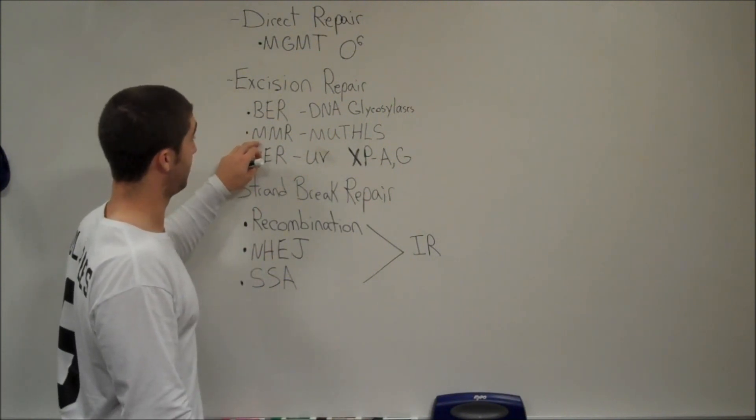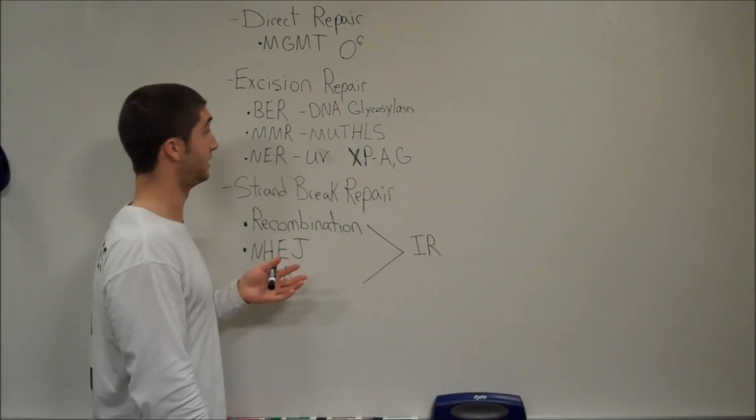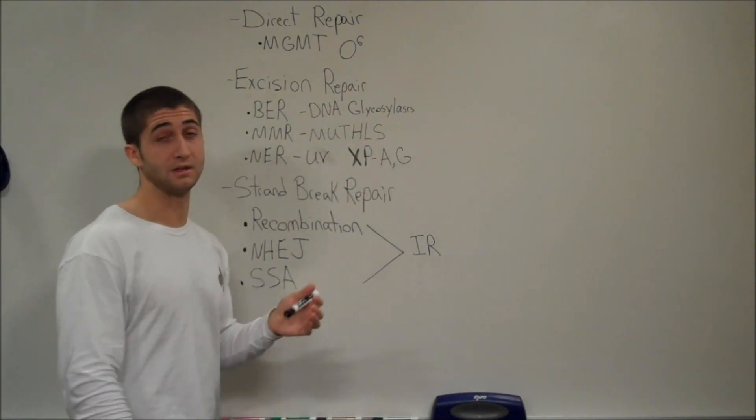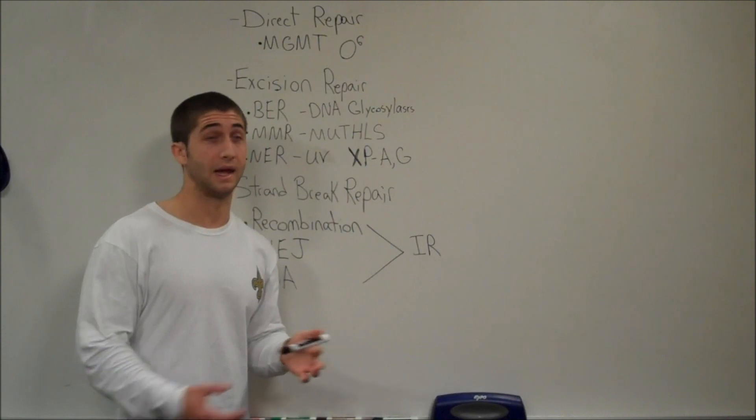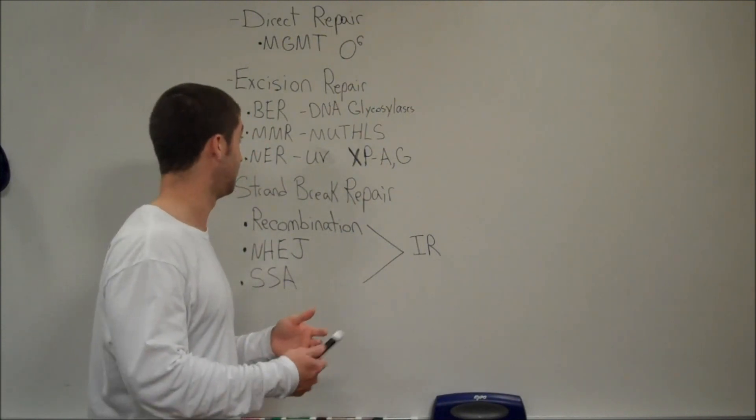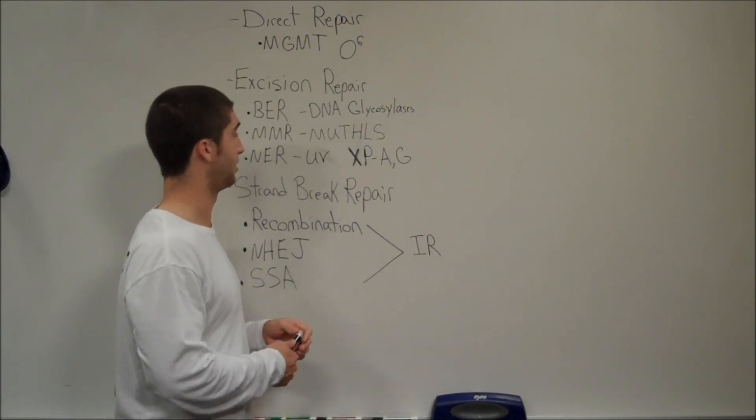Next one is called the mismatch repair system. And this is the major pathway that E. coli uses. It uses this protein complex called MutHLS system to recognize the damaged DNA and to remove it. And then DNA polymerase is going to come in and synthesize the new DNA, and ligase comes in to re-ligate it.